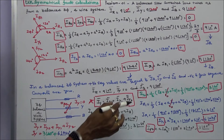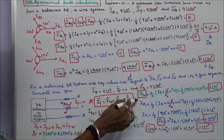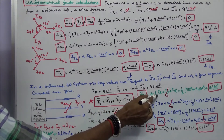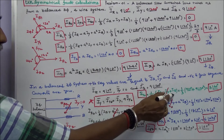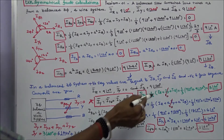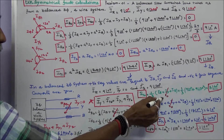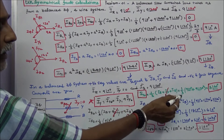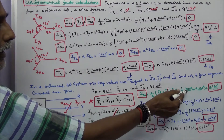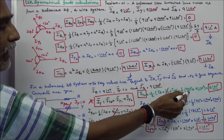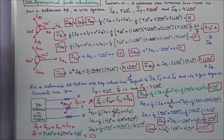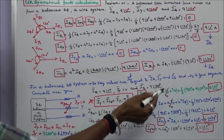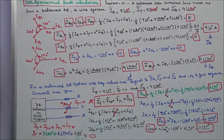First we calculate IY0. IY0 is equal to 1/3 into (IR plus IY plus IB). Since IY is equal to zero, therefore IY0 is equal to 1/3 into (9 angle 0 degrees plus 9 angle 120 degrees). IY0 is equal to 3 angle 60 degrees.